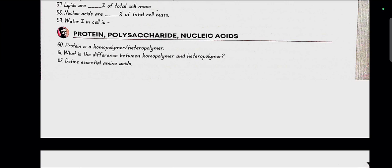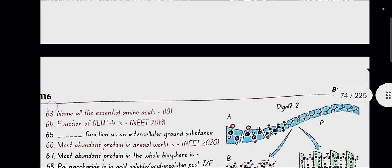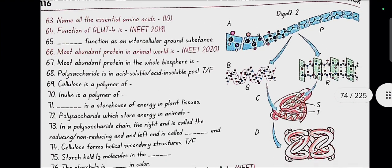Define essential amino acids. Amino acids which cannot be synthesized by our body hence has to be taken from outside are called essential amino acids. Name the essential amino acids. There are 10 essential amino acids according to NCERT: histidine, isoleucine, leucine, lysine, methionine, phenylalanine, threonine, tryptophan, arginine and valine.